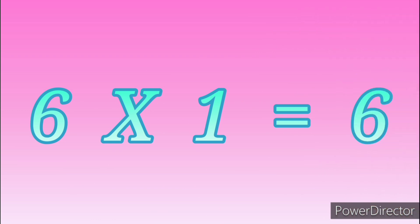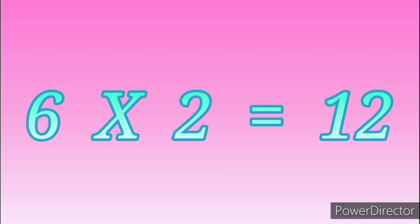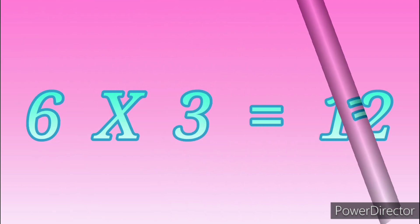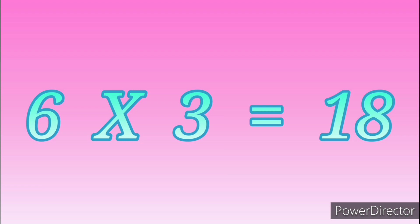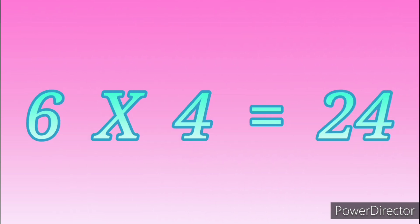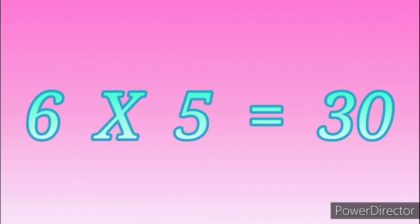Table of Six: 6 ones are 6, 6 twos are 12, 6 threes are 18, 6 fours are 24, 6 fives are 30.